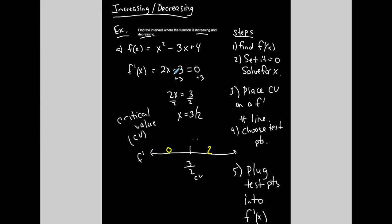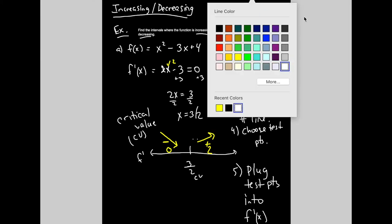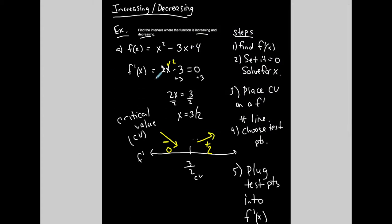Take the test points and plug them into f prime. You just want to know the sign. Plugging in 0: 2 times 0 minus 3 gives a negative outcome. If the first derivative is negative, you are decreasing — a negative rate of change means decreasing. Plugging in 2: 2 times 2 is 4, minus 3 is positive. If the first derivative is positive, you're increasing along that interval. If it's negative, you're decreasing along that interval.